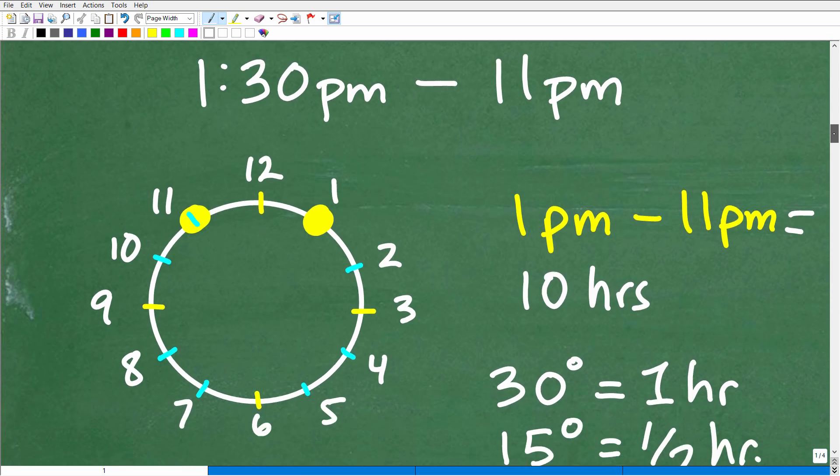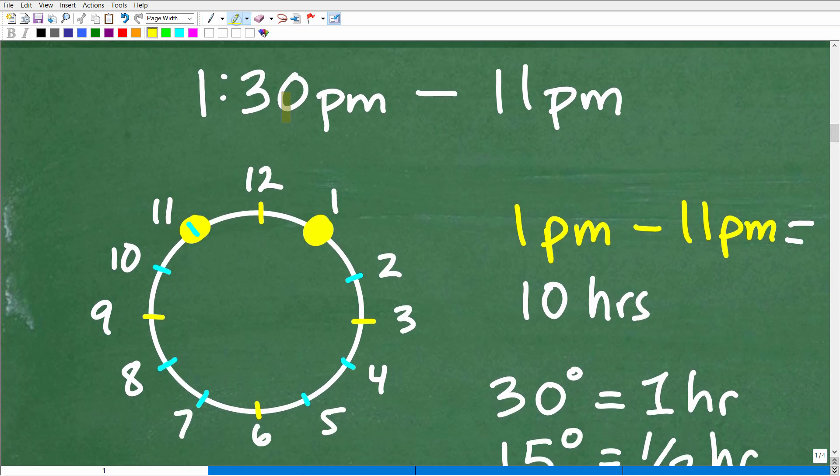So, let's go ahead and take a look at the next step. So, again, we want to figure out how many degrees are between 1:30 and 11 PM. Let's go ahead and just make this nice and simple here for a second. Let's just figure out between 1 PM and 11 PM. We'll get to this 30 degrees here in a second.